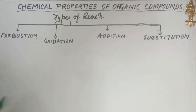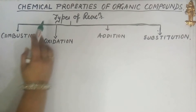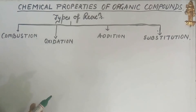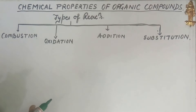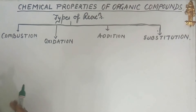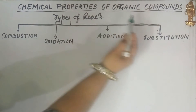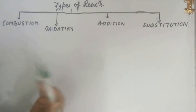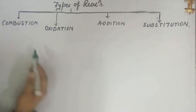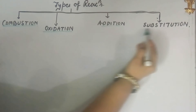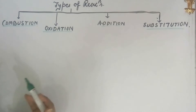Hello students, today in this video we are going to discuss the chemical properties of organic compounds. As we have already learned, organic compounds contain carbon and hydrogen, and sometimes also oxygen, sulfur, and nitrogen. Here we are going to talk about the four important types of reactions given by organic compounds in the tenth standard syllabus: combustion, oxidation, addition, and substitution reaction.